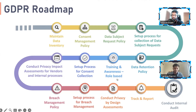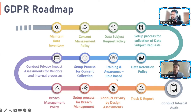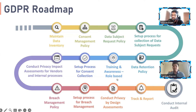One unauthorized access event doesn't necessarily require regulatory reporting — that would waste time. But if more than 1,000 records are exposed publicly, you must notify. From experience in breach management, when there is no established process, things go wrong. You need to be ready before a breach happens — that's the key lesson.